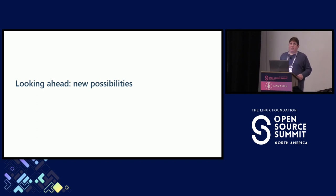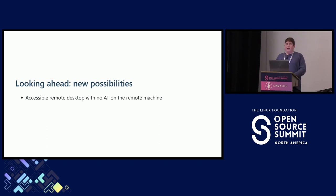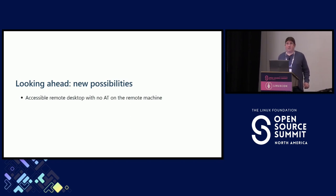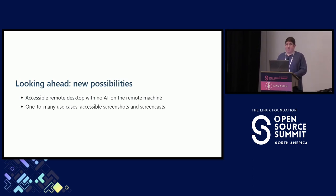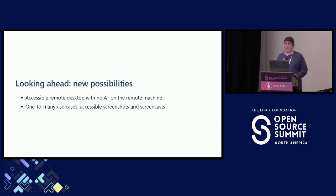Looking ahead, a couple of new possibilities that I think are pretty exciting. Accessible remote desktop using protocols such as VNC or RDP or proprietary solutions, without requiring the remote side of the connection to run an assistive technology such as a screen reader. And for me the even more exciting one is accessible screenshots or screen casts — without the creator of the image or the person running the screen cast having to do anything special, because the accessibility trees can just be included in the image or pushed along with the screen cast.